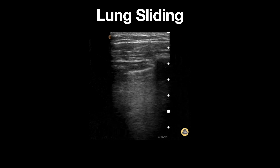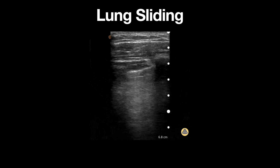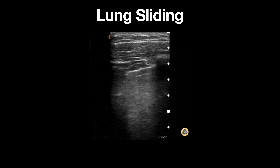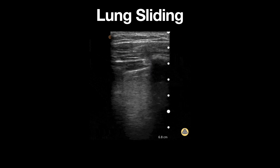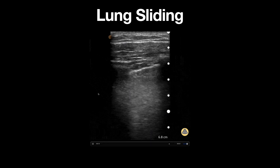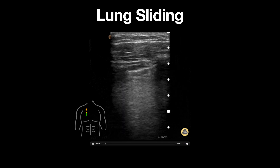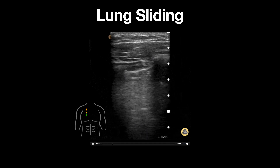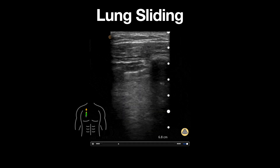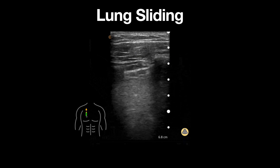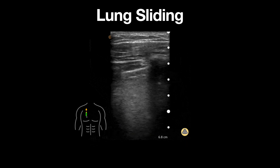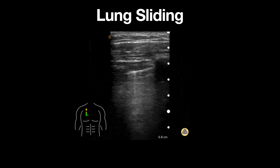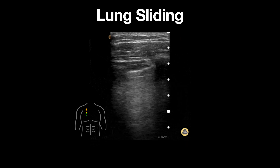This is an ultrasound clip demonstrating normal lung sliding, which rules out a pneumothorax at this lung space. A linear probe is used and placed in a parasagittal orientation along the chest wall, spanning a single intercostal space.